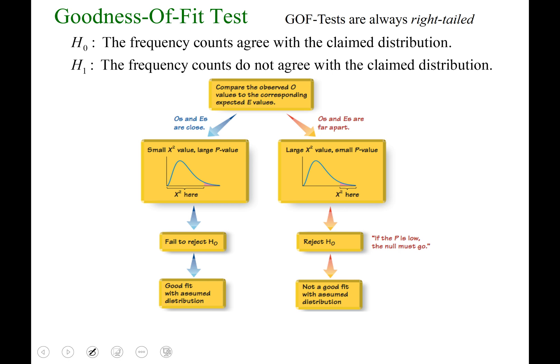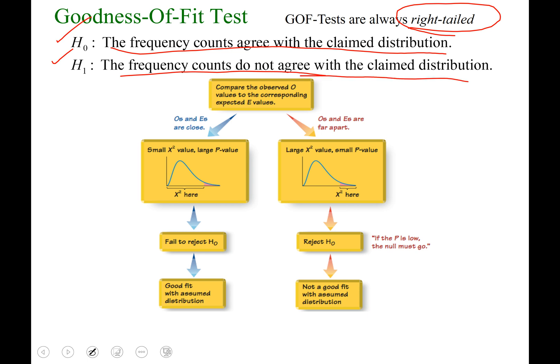To set up a goodness of fit test, it is always going to be a right-tailed test. You're going to use two capital H's — H-sub-0 and H-sub-1. For your null hypothesis: the frequency counts agree with the claimed distribution. For your alternative hypothesis: the frequency counts do not agree with the claimed distribution.